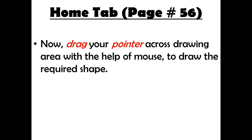Drag means to move anything on the computer screen with the help of the mouse. First, click on the thing you want to move or draw. While pressing the left mouse button, move it in the downward direction. Click on the shape, move your mouse to the drawing area, press the left mouse button, and start moving your mouse downward — it will make a square dotted box. This is basically dragging.